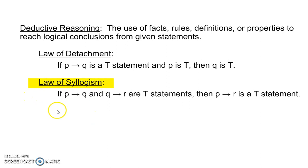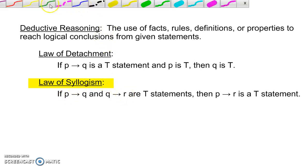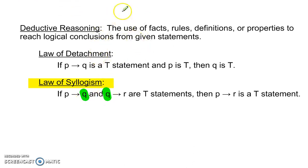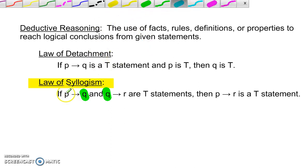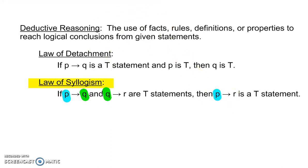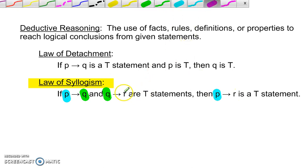The law of syllogism: if p then q, and q then r, are both true, then from p we can conclude r. From these two statements — if this concludes this, and from that one we conclude the third — then from the first, we conclude the third.